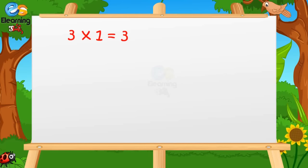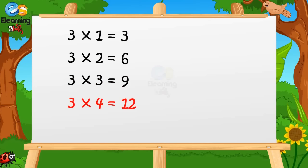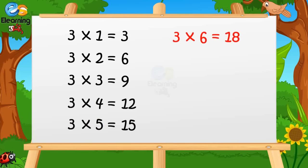Three ones are three. Three twos are six. Three threes are nine. Three fours are twelve. Three fives are fifteen. Three sixes are eighteen.